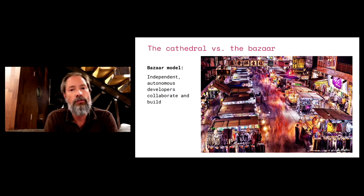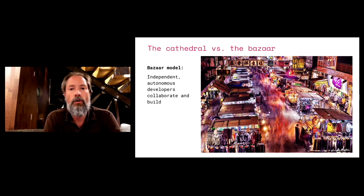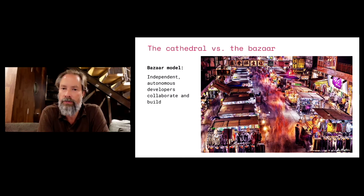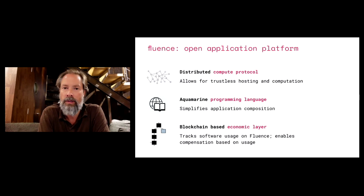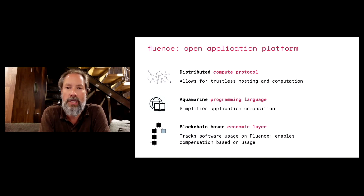If given just a chance, just an opening, some of the right tools, we think the global developer community can innovate and create a Bazaar model — just like it has for open source software — but for open applications. And what are those tools? First, you need a distributed computing protocol to host applications in a way that you trust and know that your access and your data can't be turned off. You need to know that when you build an application, that application can't turn around and disable your access. That's critical. Second, you need a scripting language that makes it incredibly easy to build. We've built the Aquamarine language, which enables this. You need to be able to compose applications from existing pieces and existing code and existing applications very quickly, very easily, very simply.